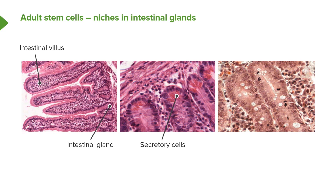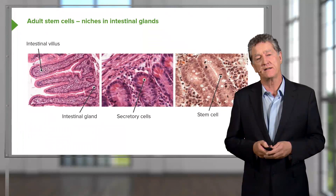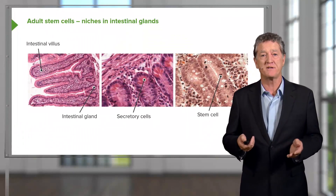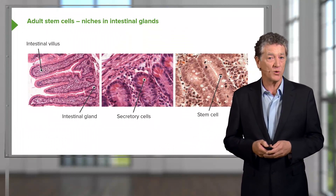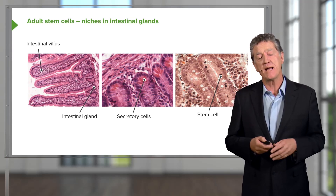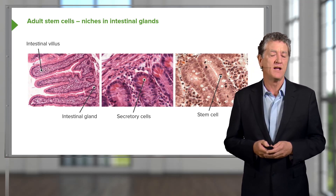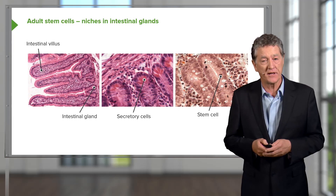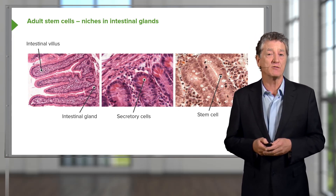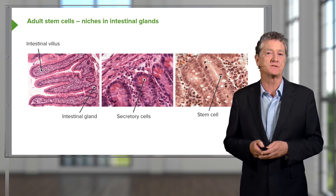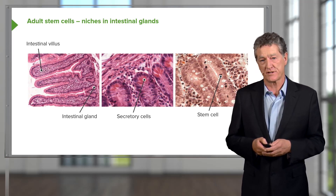Besides these secretory cells, there are also stem cells. Different stains are used to show up clumps of chromosomes in some of these cells that are undergoing mitotic activity. These stem cells at the base of these glands produce other cells that move up along the surface of the little glands and differentiate into secretory cells, or they can differentiate into the surface epithelial cells and be involved in the absorption of products from the lumen. These stem cells are very important in epithelia because epithelial cells are continually being replaced, and they're replaced because of these stem cells being present in all epithelial surfaces that we'll come across when we look at the organ systems in later lectures.